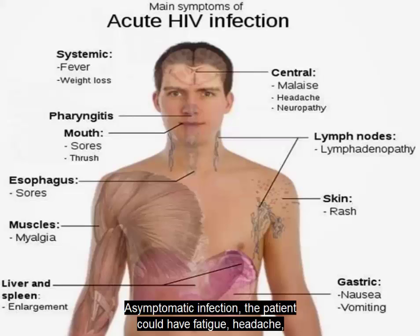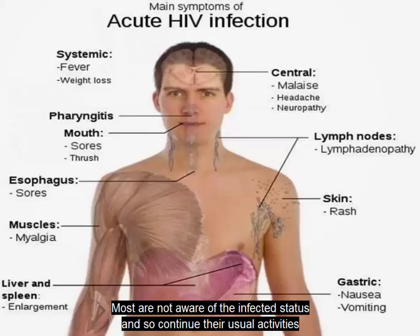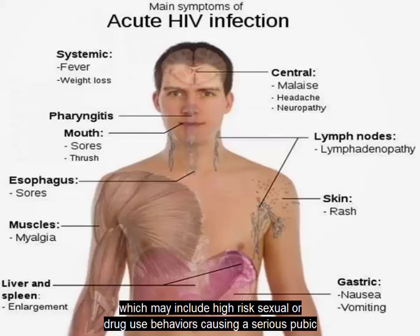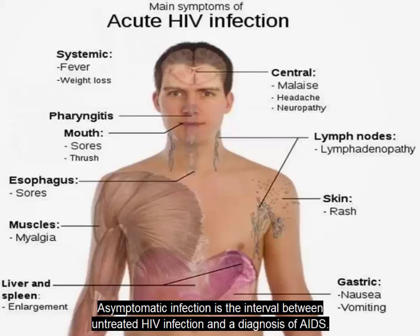In asymptomatic infection, the patient could have fatigue, headache, low-grade fever, and night sweats. Most are not aware of their infected status and so continue their usual activities, which may include high-risk sexual or drug use behaviors, causing a serious public health problem. Asymptomatic infection is the interval between untreated HIV infection and a diagnosis of AIDS.